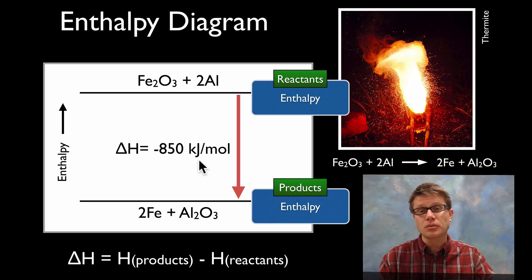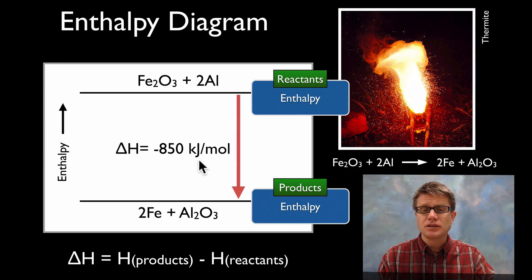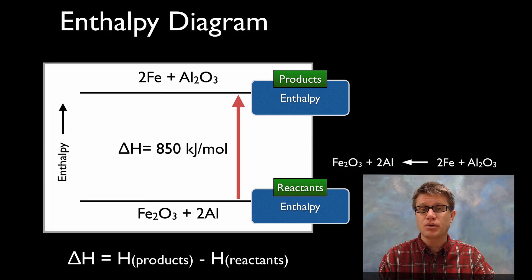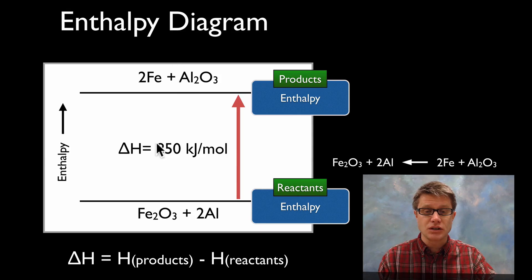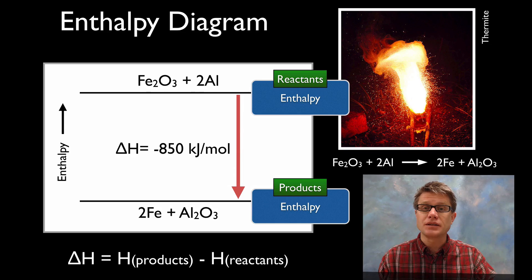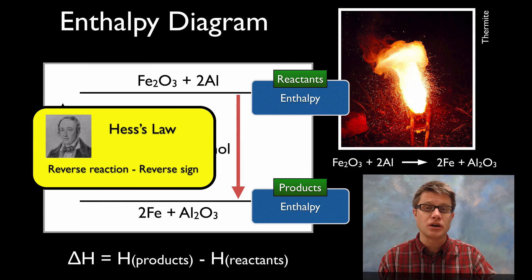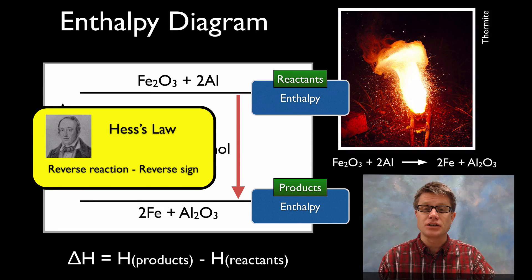If we actually turn that reaction around and make the reactants the products, the magnitude of the change in enthalpy stays the same — the only thing that changes is the sign in front. And if we swap it around again it's going to be negative again. This is the first of Hess's law ideas you should understand: if we reverse the reaction, we have to reverse the sign of the change in enthalpy.